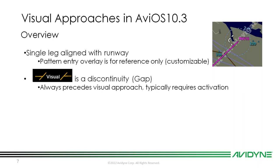The visual approach will appear in your flight plan with yellow lines marked 'visual' — that is a discontinuity, or gap in the route. There's a gap because you have to activate it; there is an overt action required to activate the approach. This discontinuity will always precede a visual approach in your flight plan and typically requires some sort of activation.